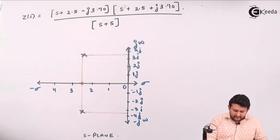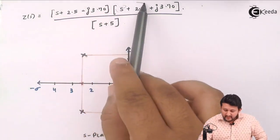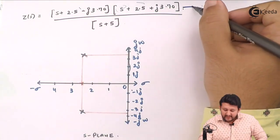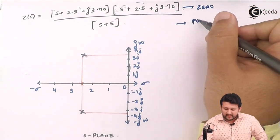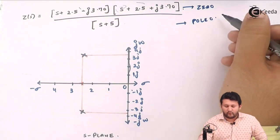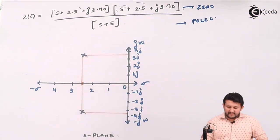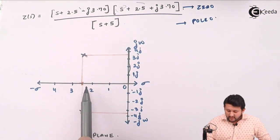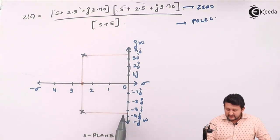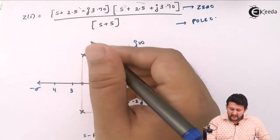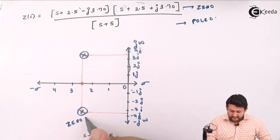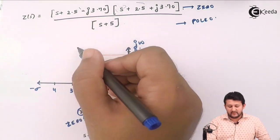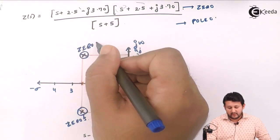That means the points over here from these two brackets, I will be getting zeros, and from denominators I will be getting poles. That means the value I got, 2.5 plus j3.70 and 2.5 minus j3.70. So these values will be your zeros. This will be your zeros.